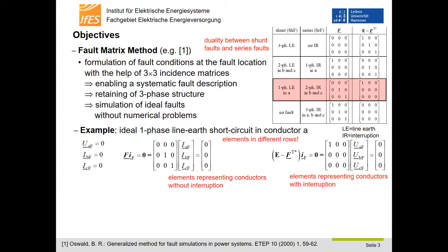The fault matrix is typical for each fault. Up to now, there is a duality shown between line-to-earth shunt faults and interruptions of electrical equipment with neutral grounding, as can be seen in the table on the right-hand side. The objective of this paper and presentation is the extension of the unified fault matrix method regarding a complete duality between shunt and series faults, in particular the duality between line-to-line short circuits and interruptions of equipment with isolated neutral.